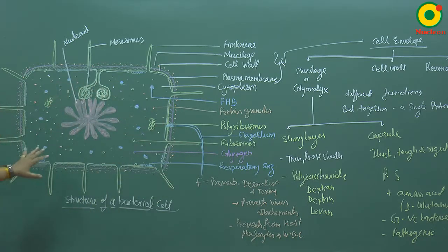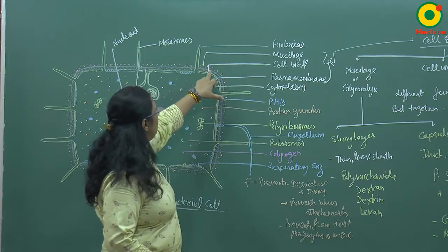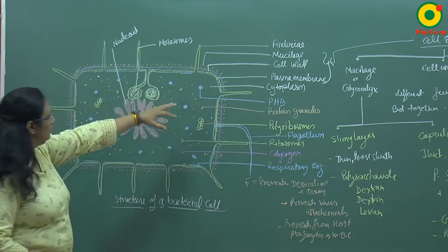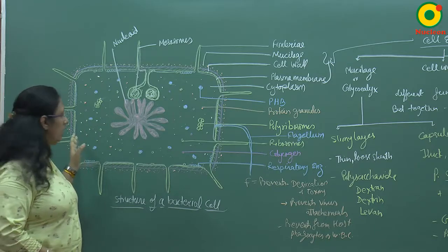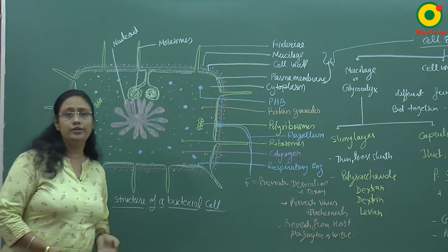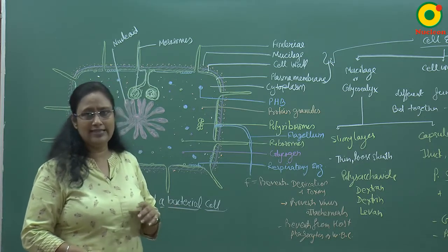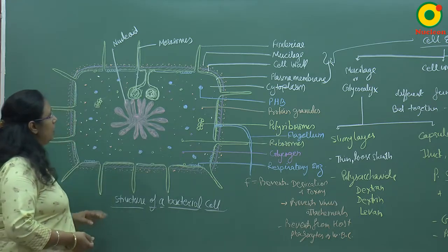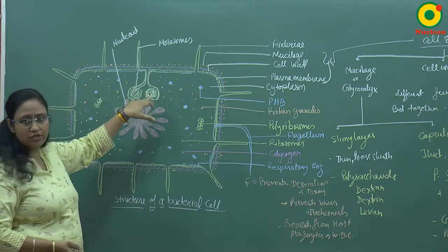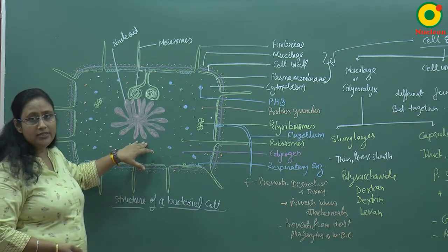This is the structure of a bacterial cell. We have discussed the cell envelope: outermost is mucilage, then the cell wall, then the plasma membrane. Below the plasma membrane, cytoplasm is present with organelles, but due to the absence of membrane-bound organelles it appears a simple, less granular structure. The plasma membrane infolding forms a structure known as the mesosome, and in the center of the cell, the nucleoid — genetic material — is present.